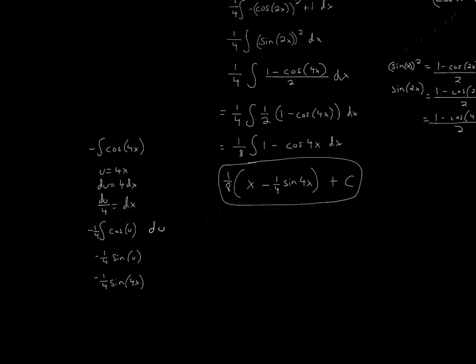So your expression will be negative 1 fourth cosine u, because we substitute in u, and then du, and then we have to have negative 1 fourth and du to represent the dx, to represent the dx. And I'll write that in here, too, just so you don't forget dx.